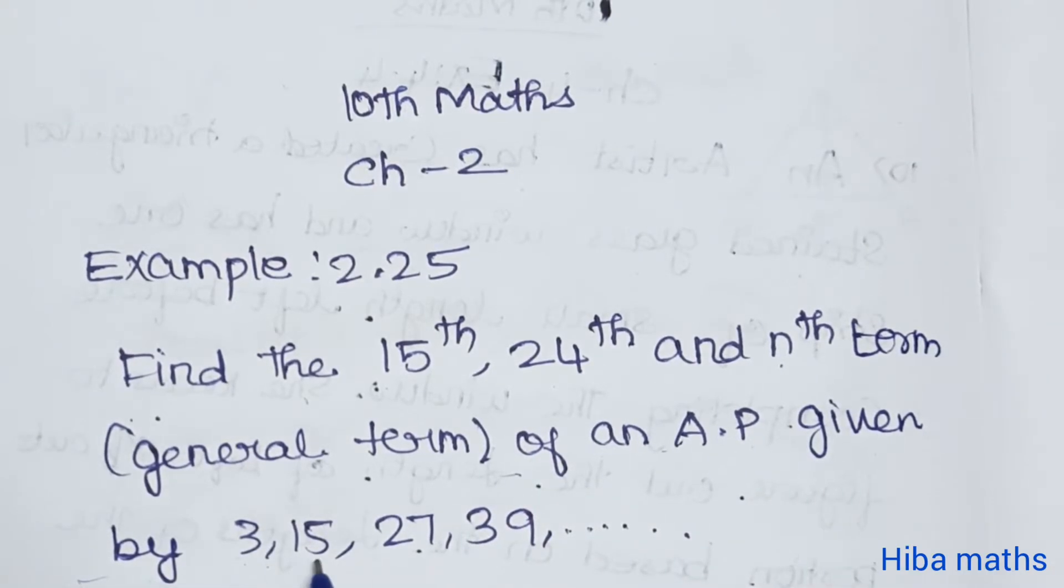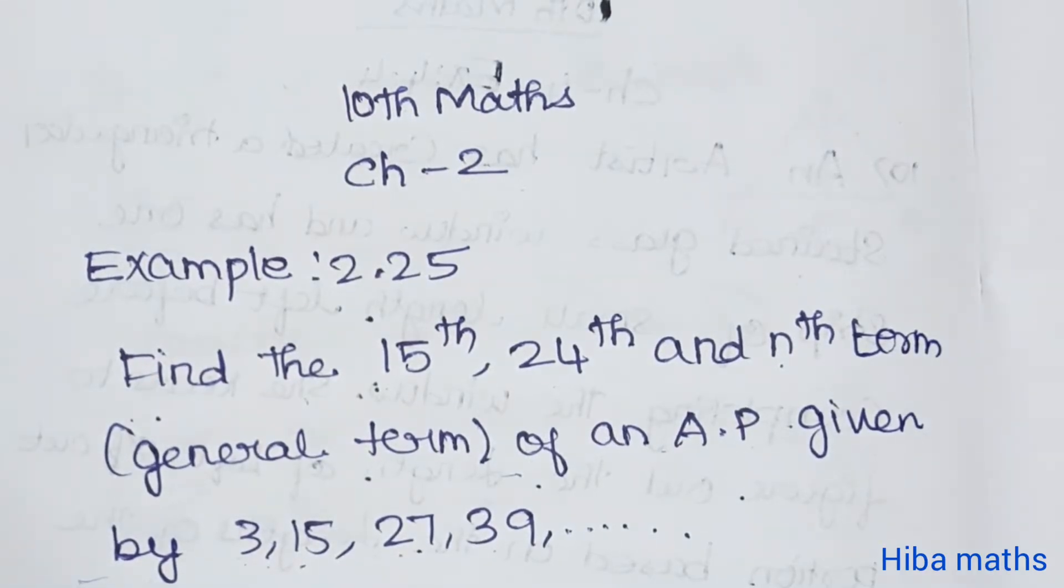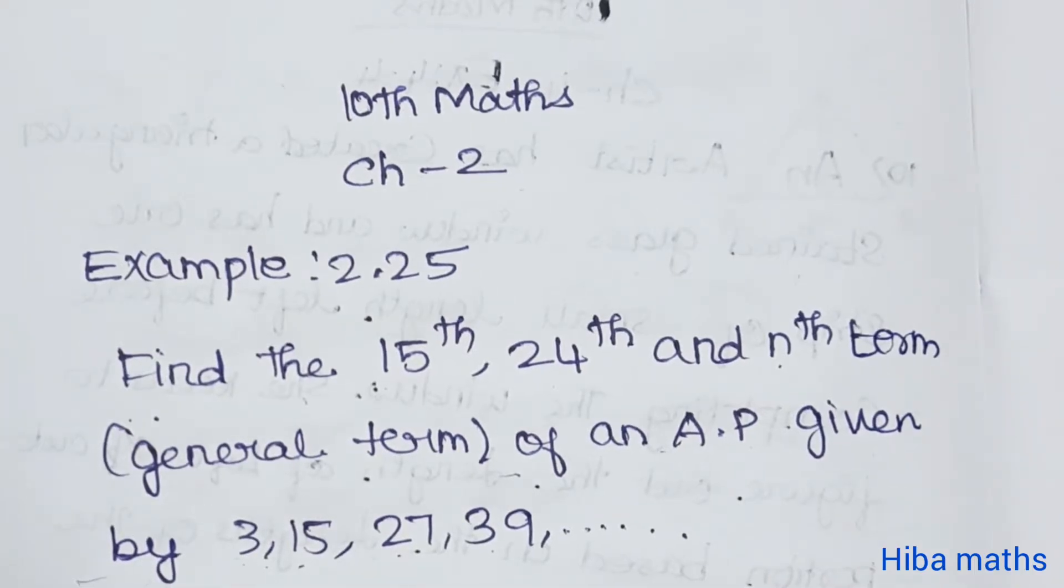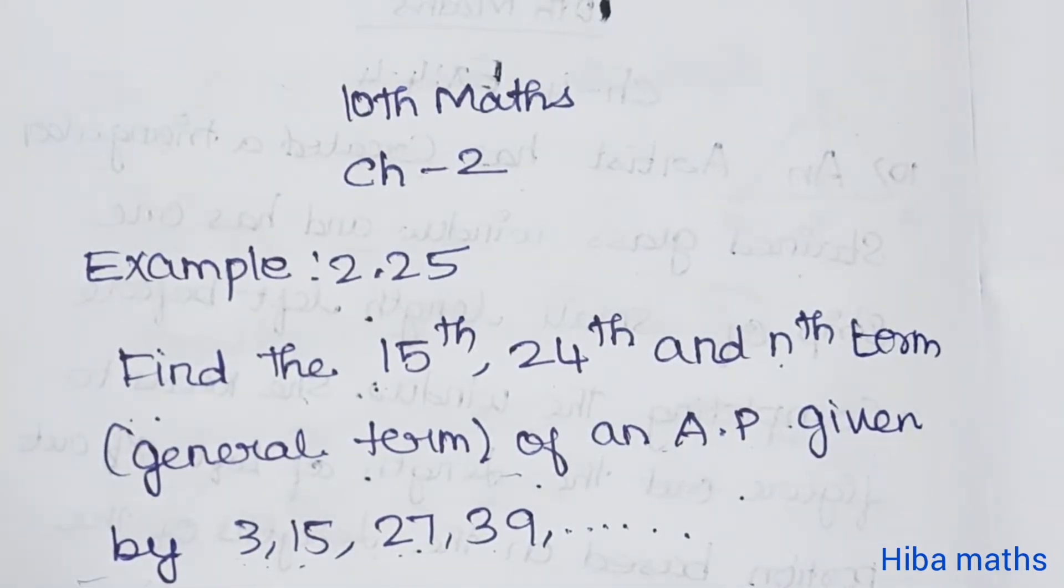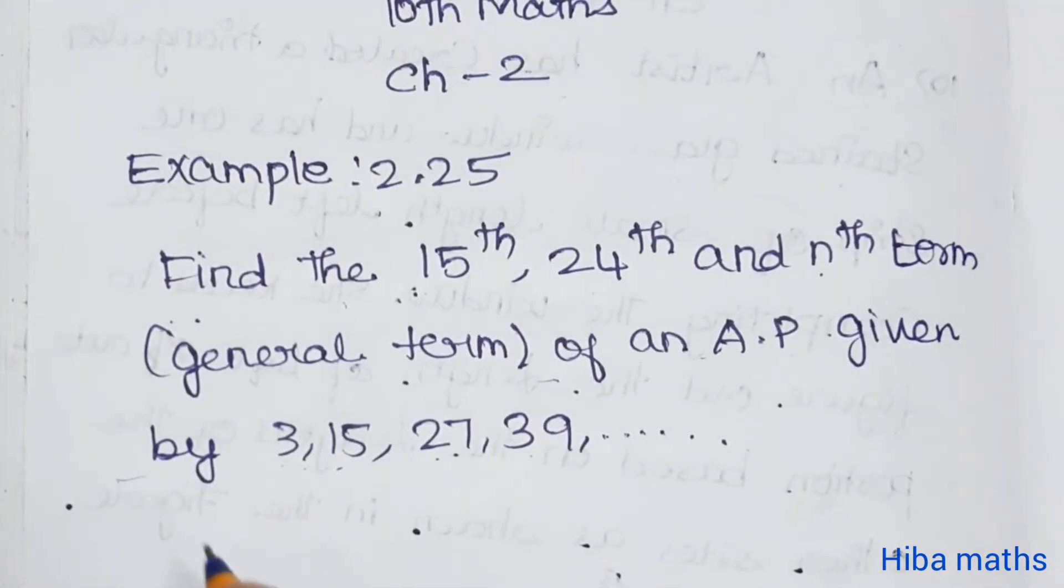Now if you have the value of AP, then you can find the a, n, d, and then you can find the t of n formula for the 15th term and the 24th term. You can find it easy to find the solution.